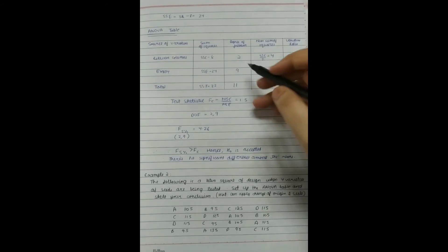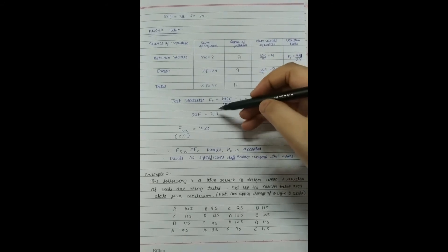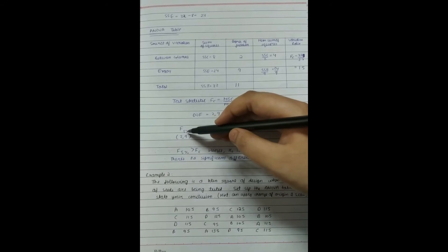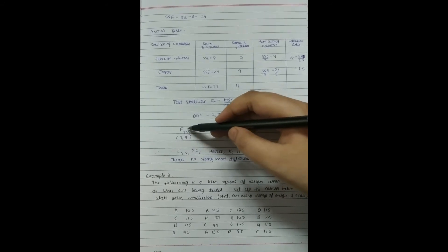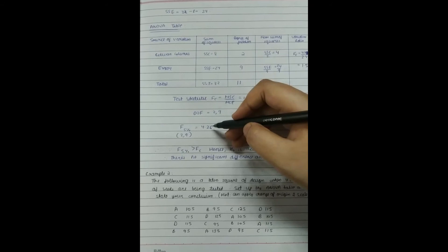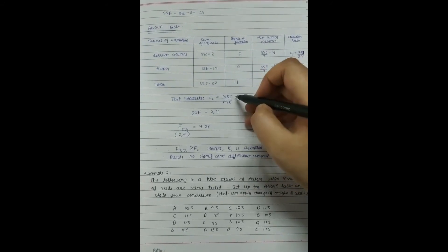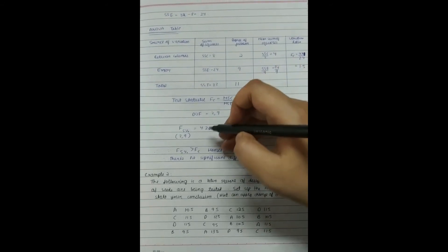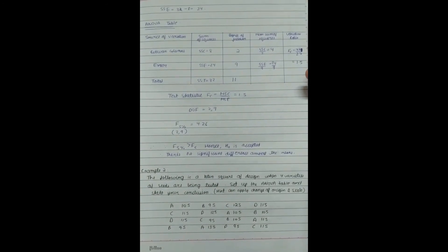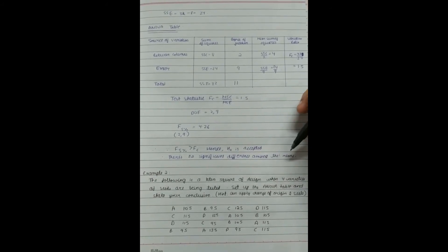With degrees of freedom (2, 9), we look up the F table and at the 5% level of significance the tabulated value is 4.26. Comparing the two values, our calculated F = 1.5 is less than the table value of 4.26. Therefore we accept H₀ and conclude that there is no significant difference among the mean yields of the three varieties of wheat.